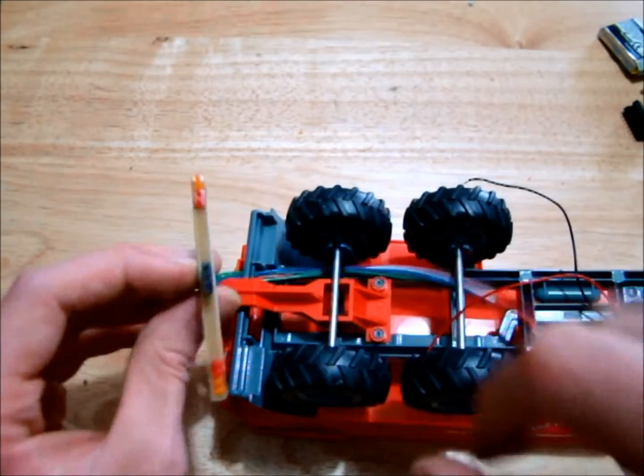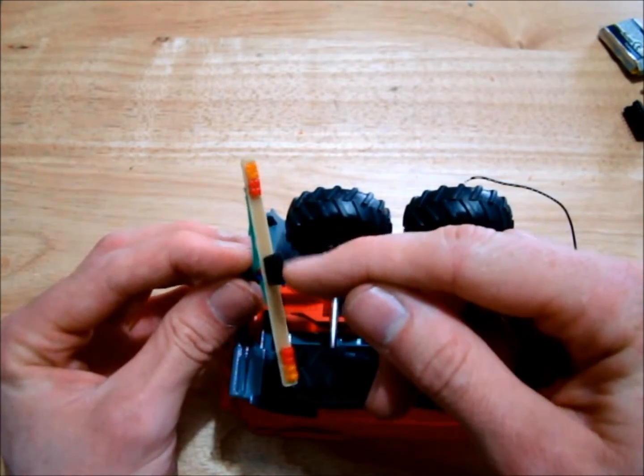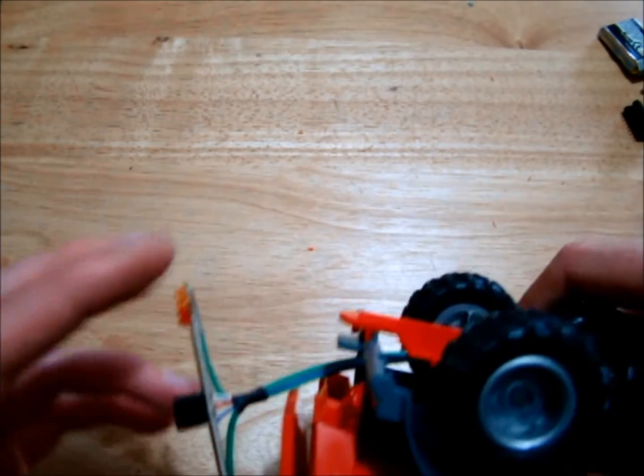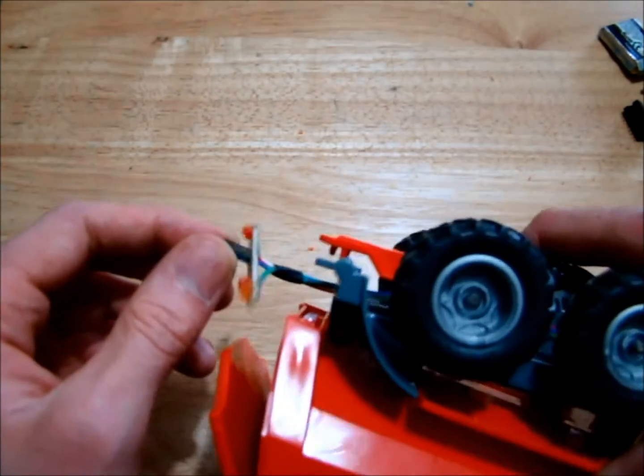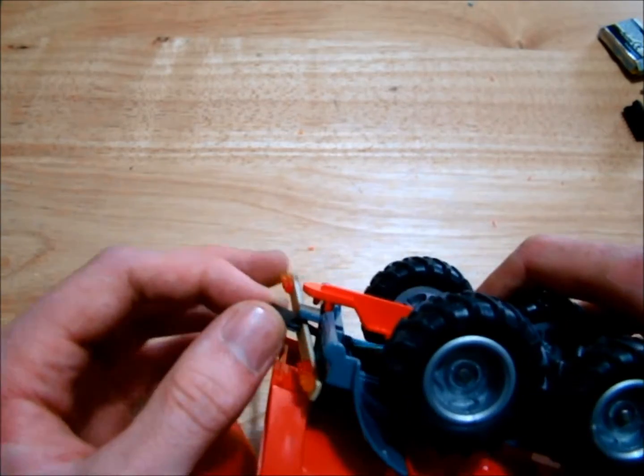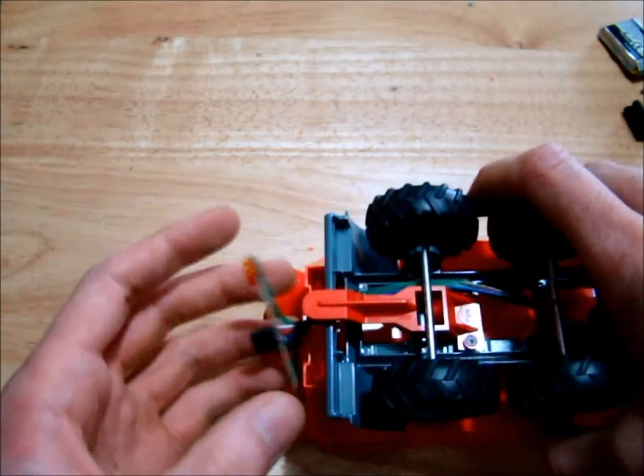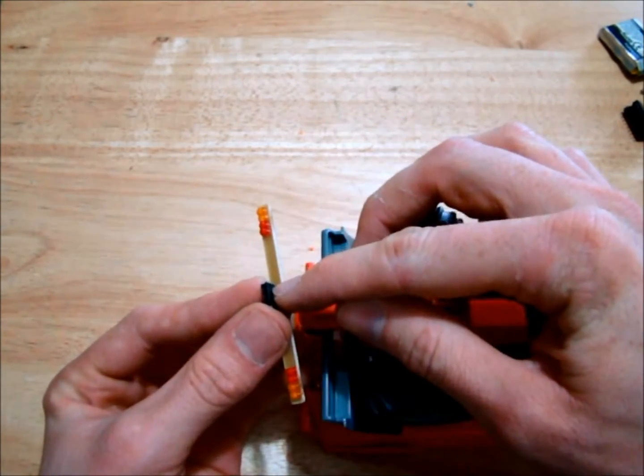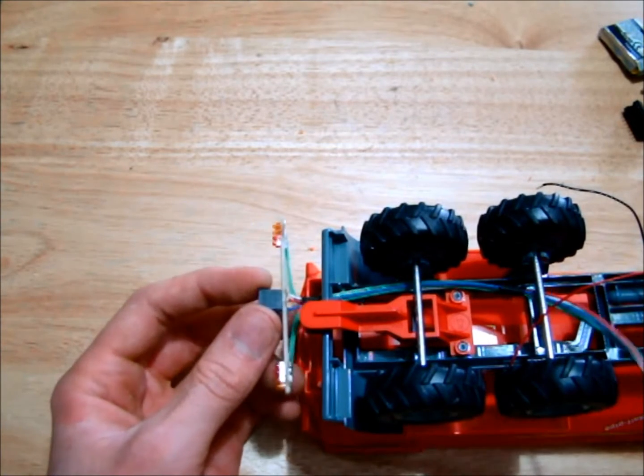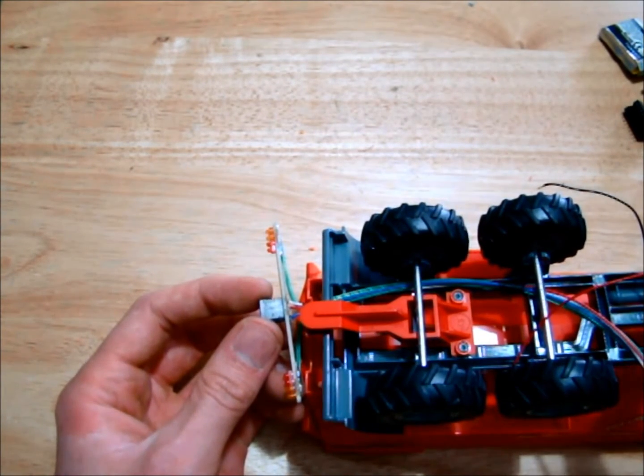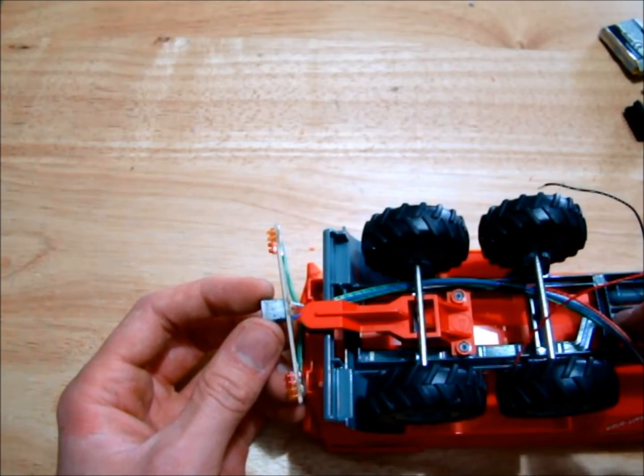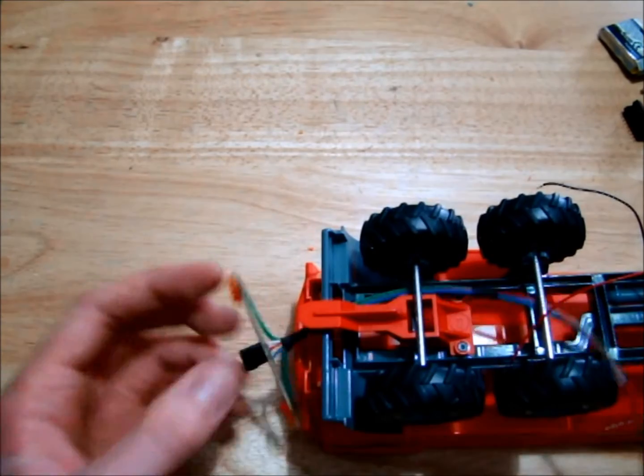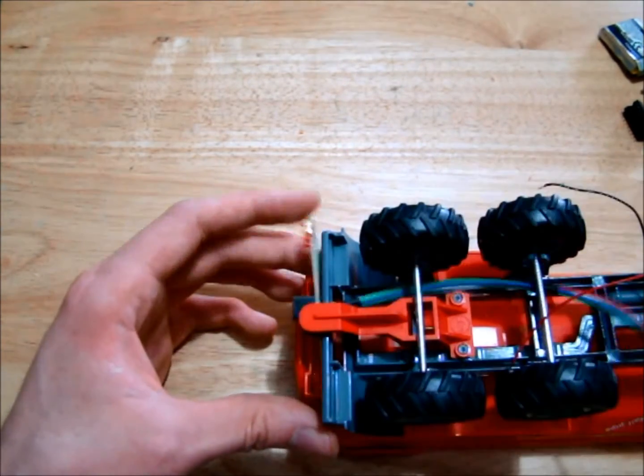So you might be wondering why I have three connections here. Well, that is because there's a tow bar here, so we need to continue our control to the trailer behind this trailer. For that we need a ground, positive, and another signal wire, just the same as our tractor. So what's going to happen is we send the signal to turn on the indicators to the chip on the trailer. The trailer turns its lights on and then it sends the signal to the following trailer. That way we're able to control all the trailers at once.